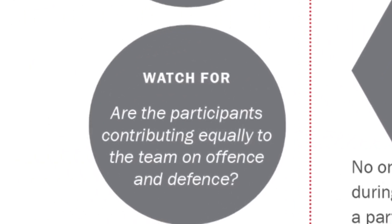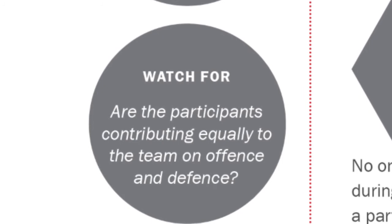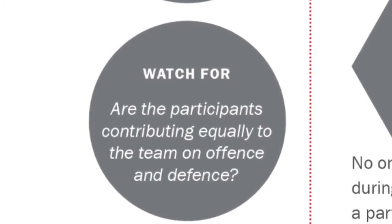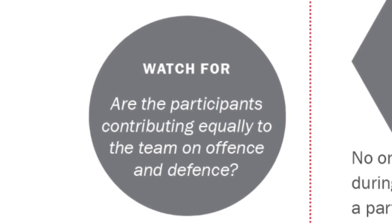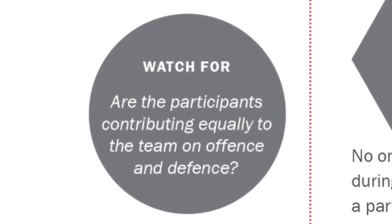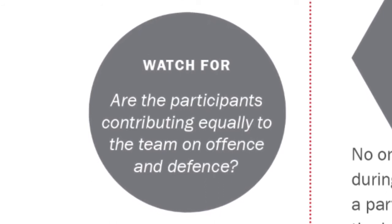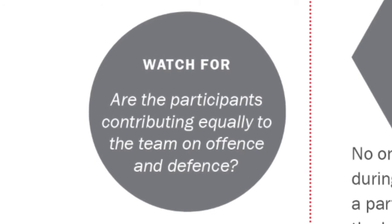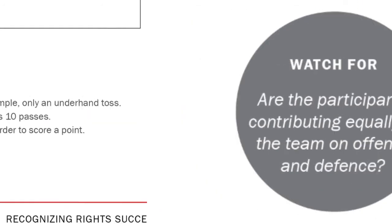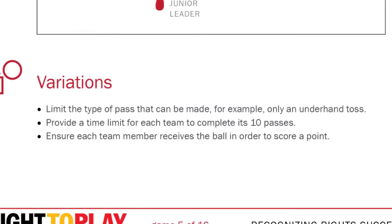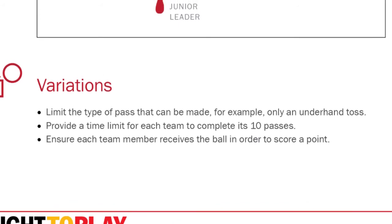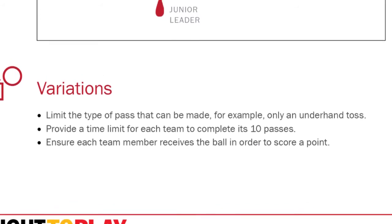Once participants are playing, refer to the watch-fors found in the bottom left-hand corner circle. If you can answer yes to these questions, your game is running smoothly. If you answer no, call out freeze and have participants regroup and take a knee stance around you to clarify how to play the game. If you find the game is too easy or too hard, check out the variations found at the bottom of the reverse side of the page, or feel free to create your own variations.